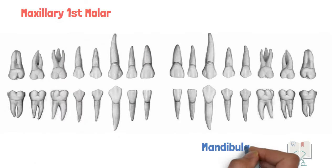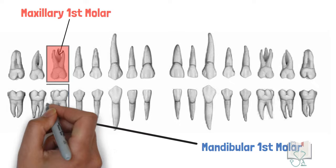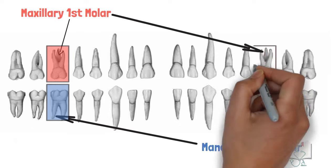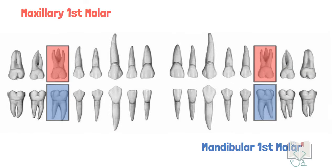Maxillary first molar and mandibular first molar are two cornerstones of the oral cavity. Let us discuss the differences between the two teeth.